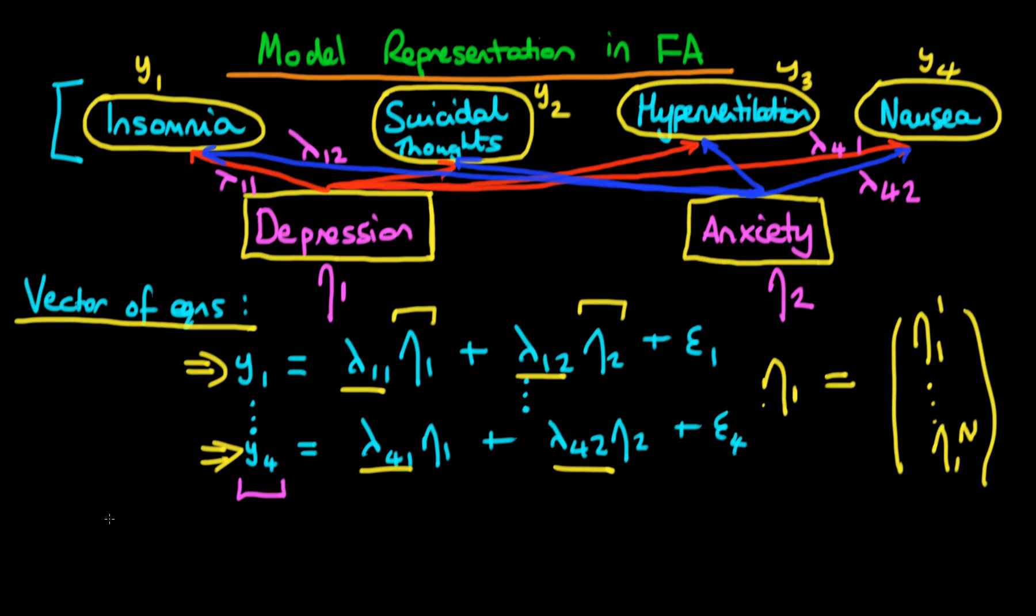Anyway, what we can actually do in the vector of equations model representation is we can stack each of these equations on top of each other. So we can have as our left hand side y1 through y4 as a vector is equal to some sort of matrix which we're going to define in a minute times our factor loading. So that's our specific factor scores, eta 1 and eta 2.